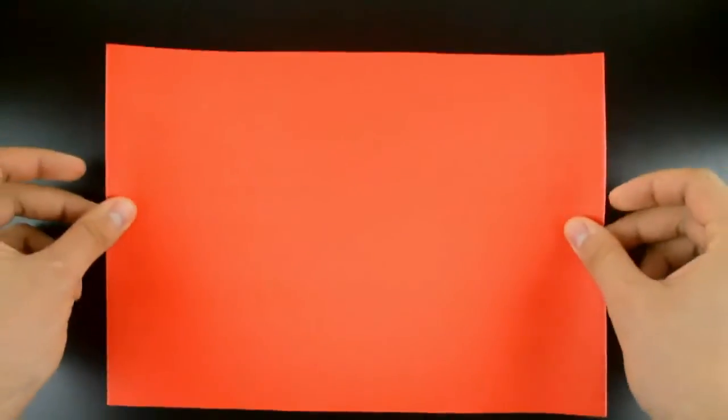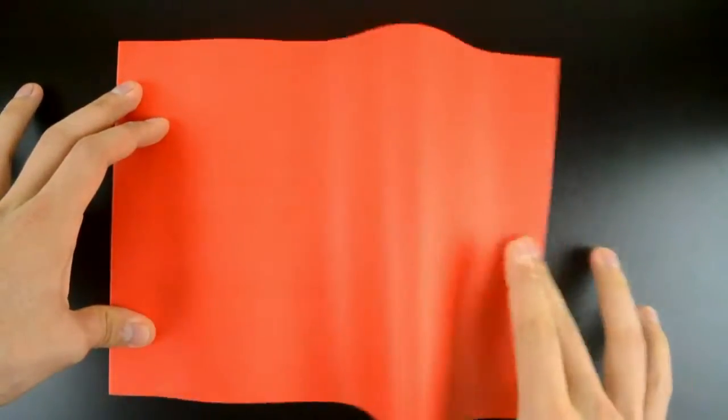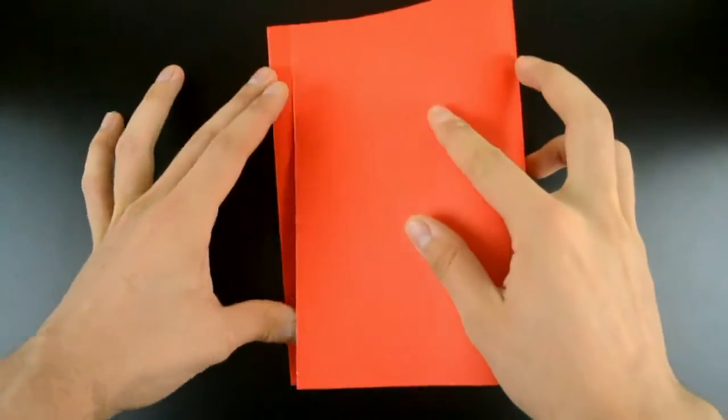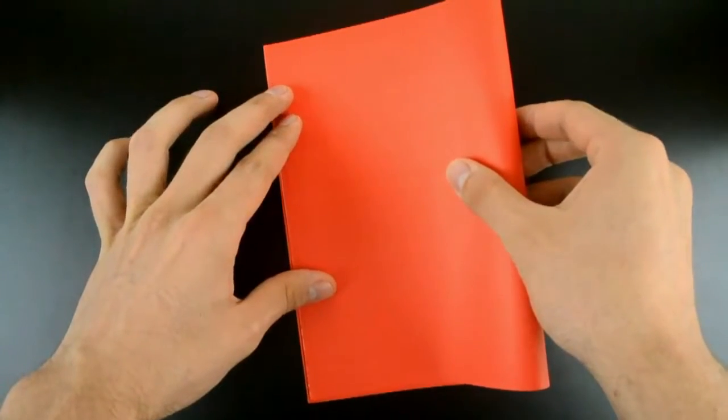The first step is to fold in half, so bring the right side to the left and just make a crease.